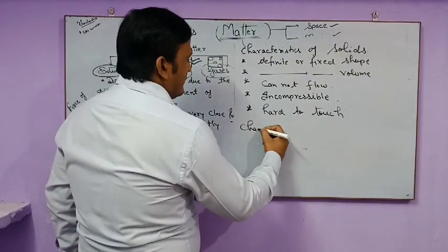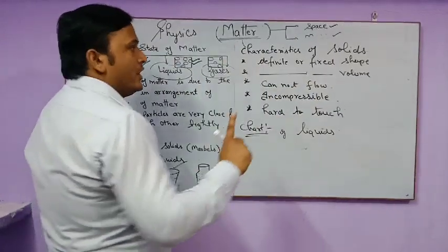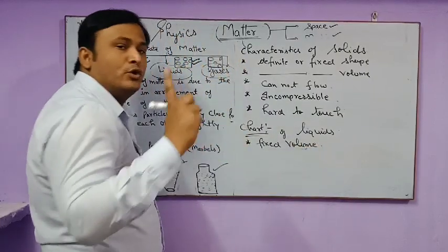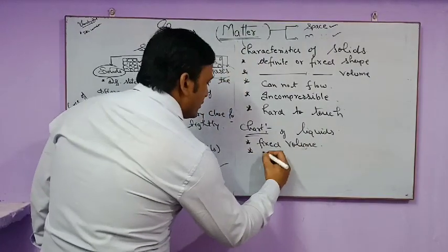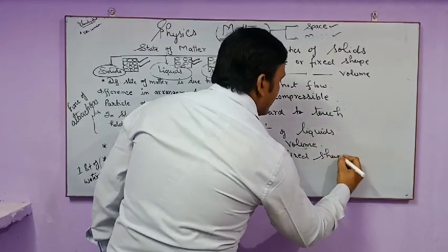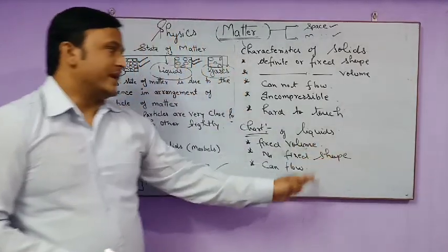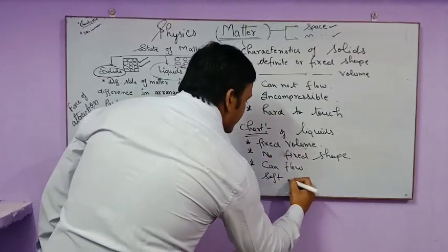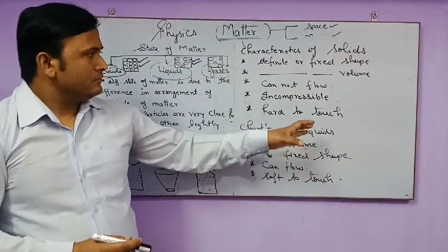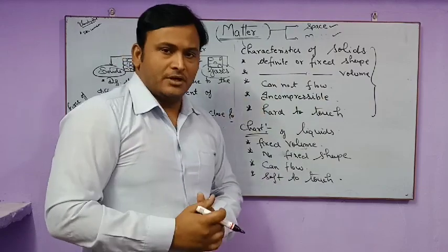Now the characteristics of liquids: first, they have a fixed volume. Second, they have no definite or fixed shape. Third, liquids can flow very easily. Fourth, they are soft to touch. These are the key points of liquids.